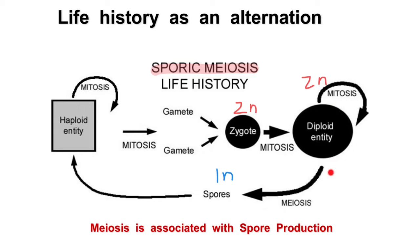Why does the diploid organism produce spores through meiosis and not gametes? Because gametes need to fuse to form a zygote. But spores, through the process of mitosis, would develop into a haploid entity, a haploid organism. If we use animals or humans as an analogy, imagine that a sperm, instead of fusing with an egg cell, would start mitosis and end up being a fetus and then an adult organism. This is exactly what happens here. All spores are going to be genetically different and they would grow into genetically different haploid entities.